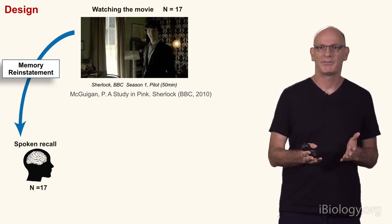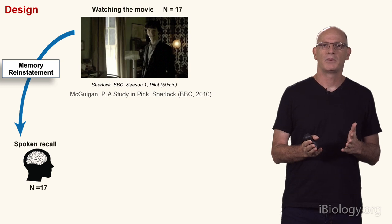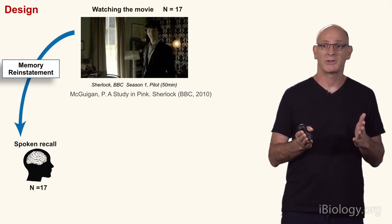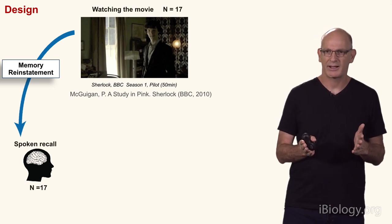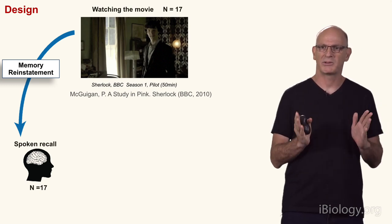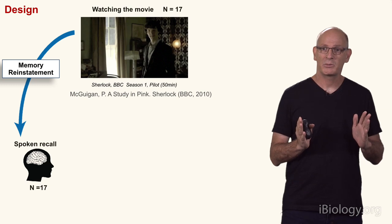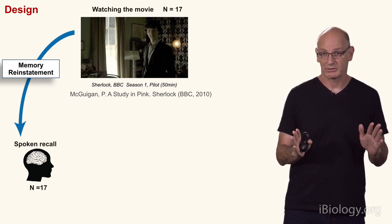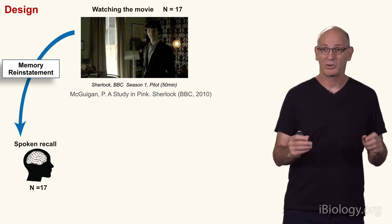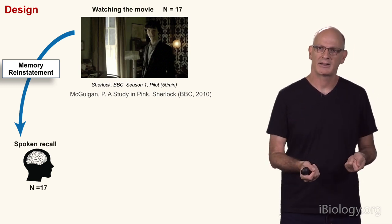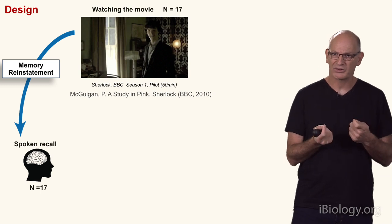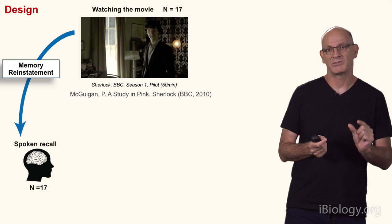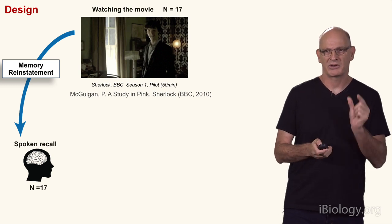So how did we do it in the lab? We took the movie Sherlock from the BBC series — the first episode, the first 50 minutes — and we showed it to people in the scanner, people that had never seen it before. So basically they had to encode a new memory into the brain. To give you a feeling of the stimuli, I'm going to play you 20 seconds from the middle of the episode for your enjoyment.